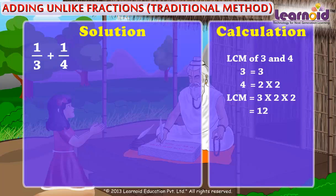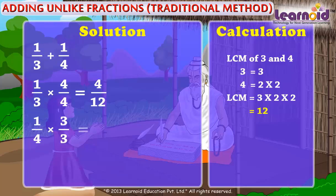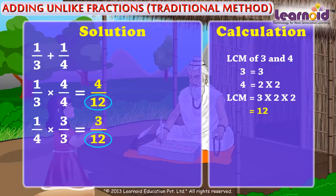We have to multiply both fractions with a number so that both denominators will be equal to 12. 1 by 3 multiplied by 4 by 4 gives 4 by 12. 1 by 4 multiplied by 3 by 3 is equal to 3 by 12. Now both fractions have the same denominator — they are like fractions.